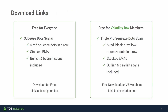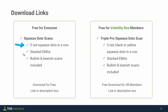For those of you that would like to download the scans ahead of time to follow along, I'll leave a download link in the description box below. Inside that download link you'll find two shared links — one for a bullish and one for a bearish scan. This scan looks for exactly what we just talked about: five red squeeze dots in a row and stacked EMAs — the 8, the 21, the 34 EMAs along with the 50 and 200 SMAs — for both the bullish and bearish condition.